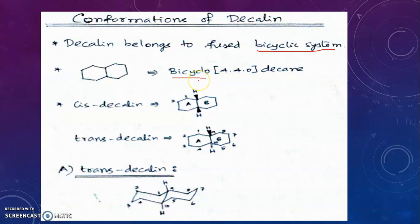Decalin exists in two configurational isomers: cis and trans. The planar structure does not exist because it involves a lot of eclipsing strain and angle strain, so planar structures are not possible. We will start with trans-decalin. This is the puckered ring form of trans-decalin where both cyclohexane rings exist in the chair conformation.